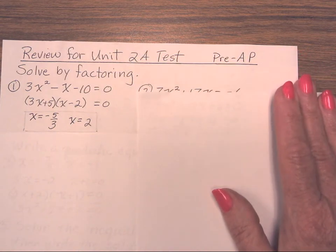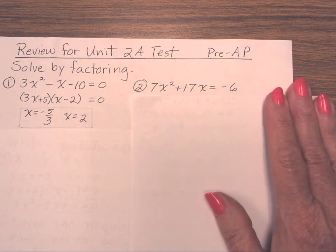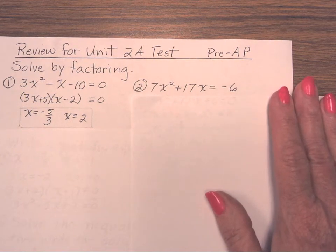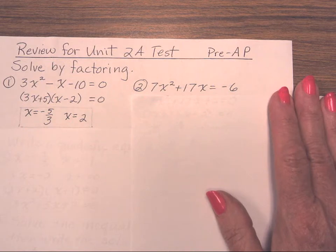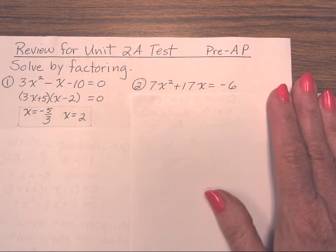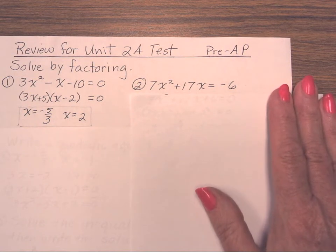Alright, number 2: 7x squared plus 17x equals negative 6. Again, you've had time to check number 1 — pause your video and see if you can work this one on your own.